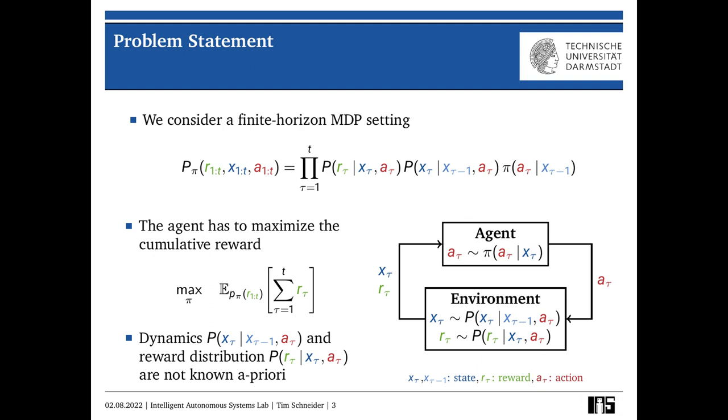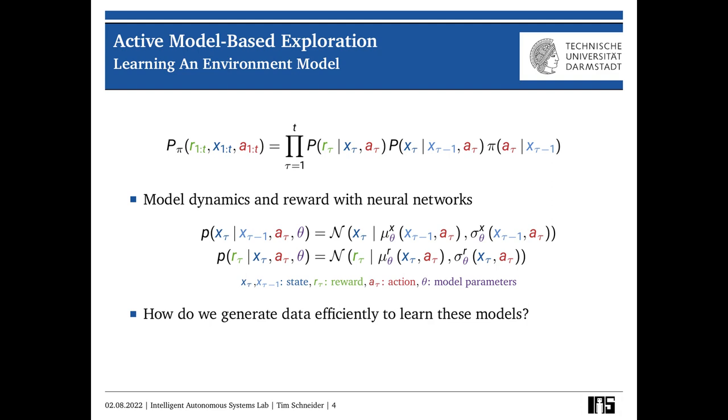And the only way the agent has to learn about those is to constantly probe the environment with new actions, observe the outcomes, and then try to make sense of what it is observing. And the way we do this in this work is to model both the dynamics and the reward with neural network conditioned Gaussian distributions. And these then get fit to the data we observe in the trials. And the question is now, how exactly do we generate data in order to learn these models as efficiently as possible?